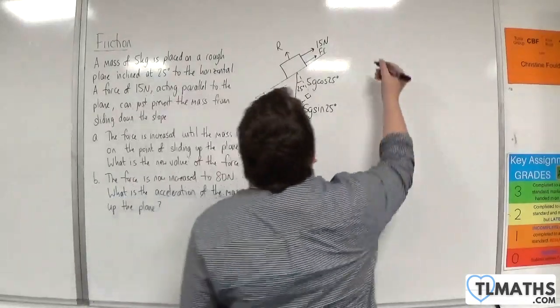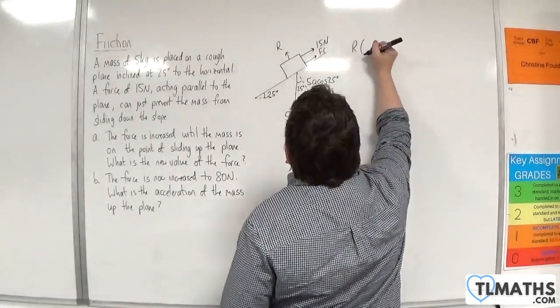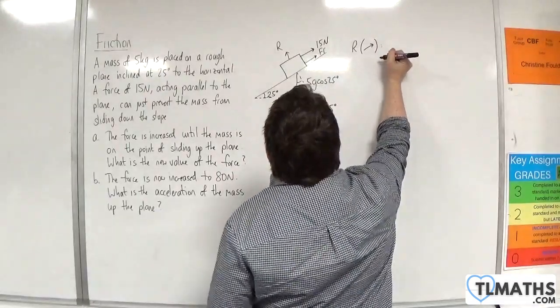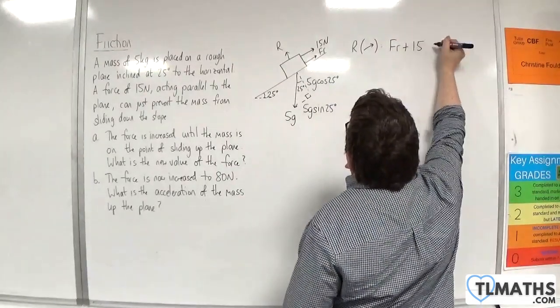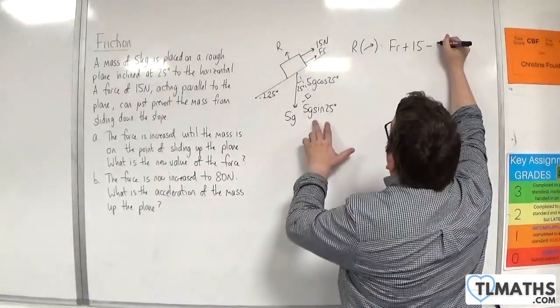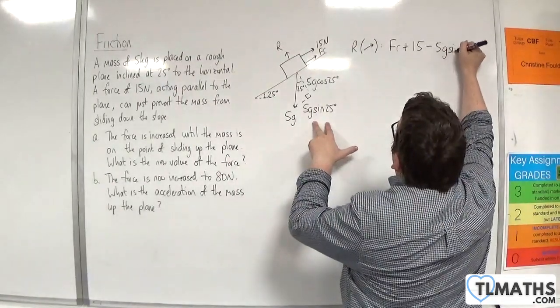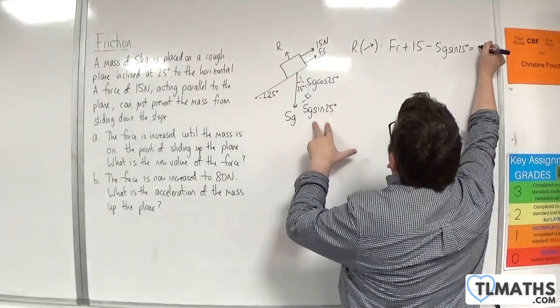So if I resolve parallel to the plane, taking up the slope as positive, we would have that the friction plus the 15 newton force take away the 5g sin of 25 is equal to 0.